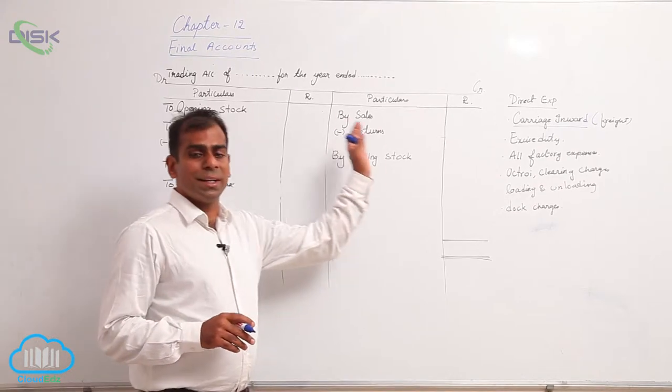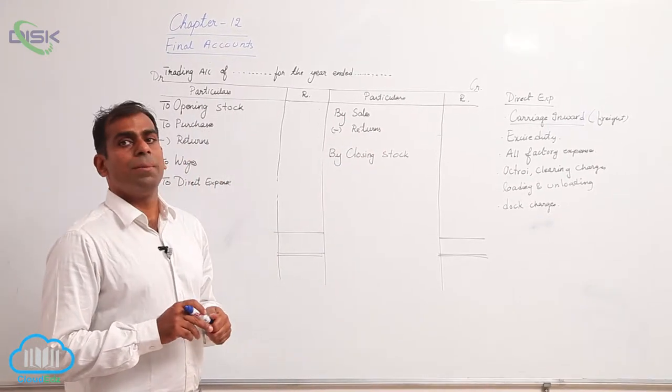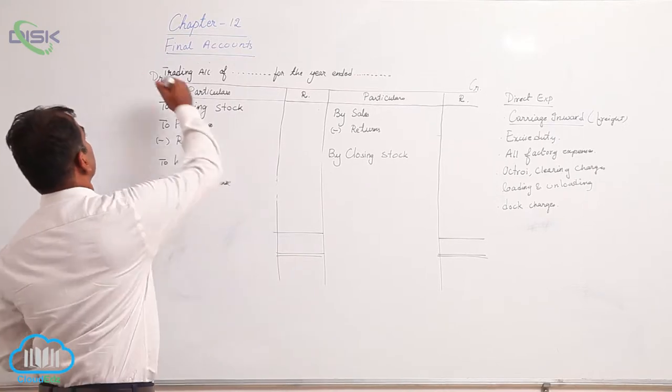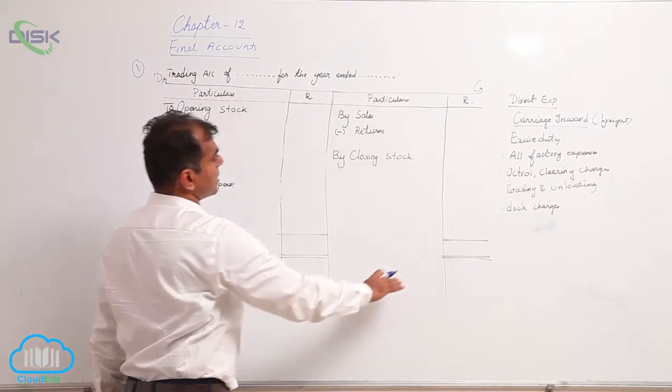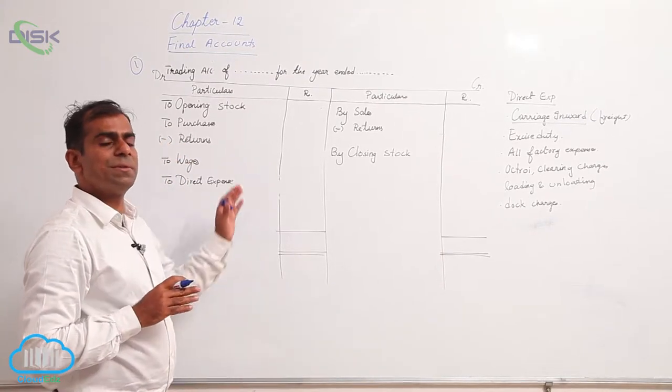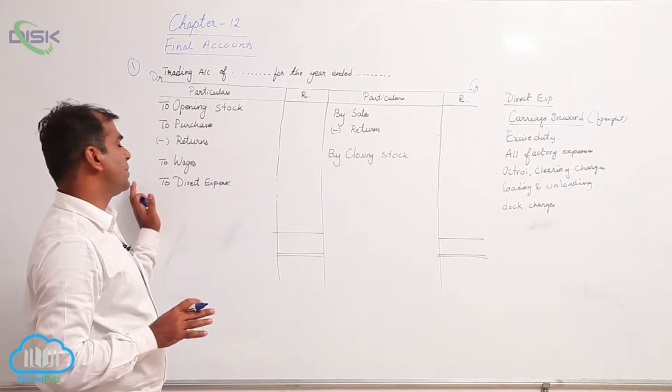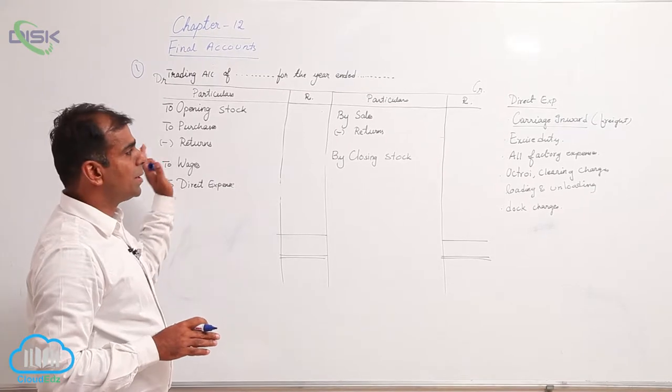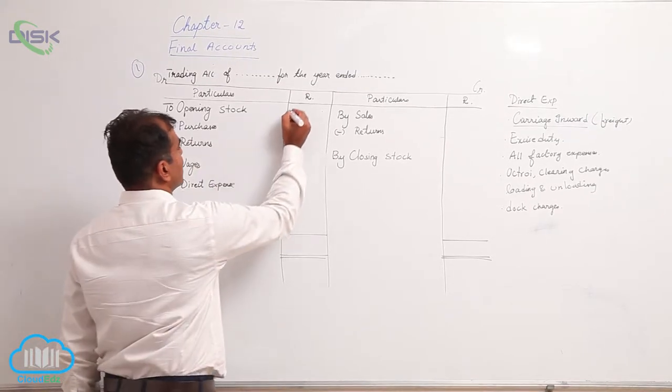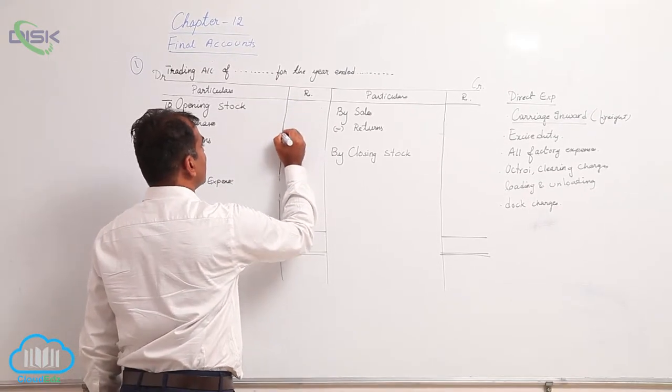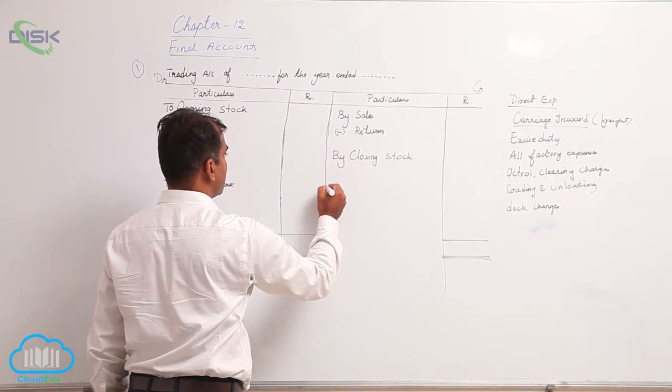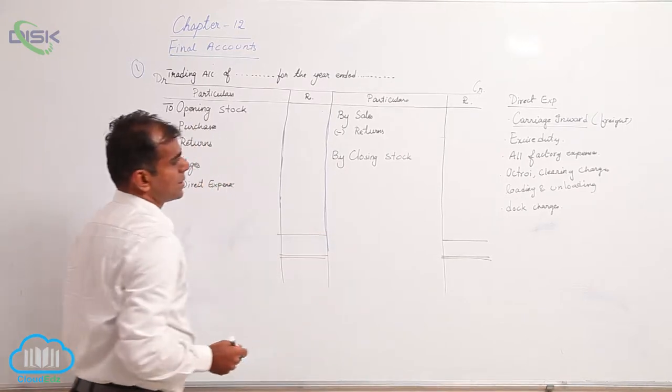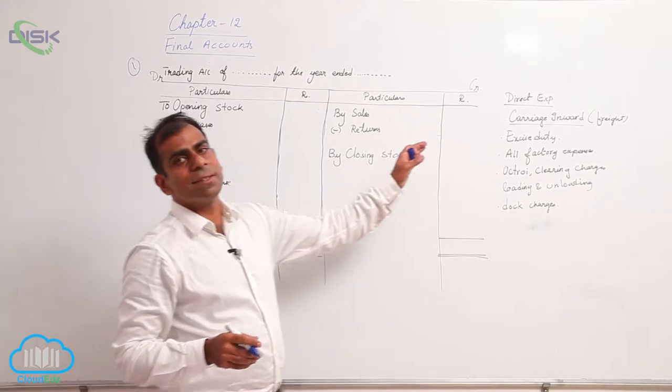How to prepare trading account - problem number one. I am using the format what we have discussed earlier because most of the problems will have minimum these items. How we are going to use this format - if you have revised your format it would be just the same what we discussed earlier. I also have list of some direct expenses which we discussed earlier on the board.